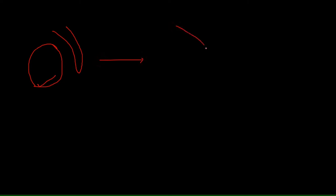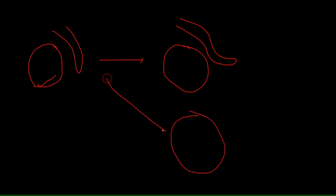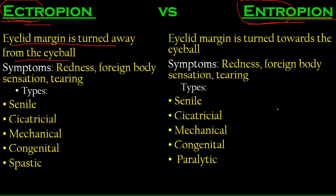Let's have a little black screen here. So here's the normal eye and here's the eyelid. If it is turned towards the outside due to some pathology, that is ectropion. If it is turned towards the inside, that is called entropion. Simple, easy, nothing difficult about that.